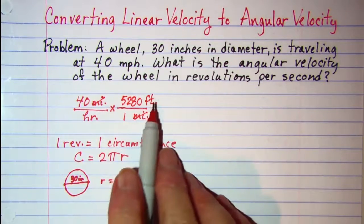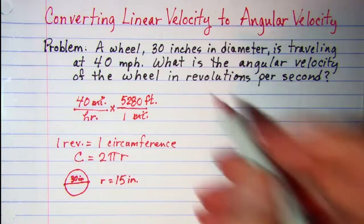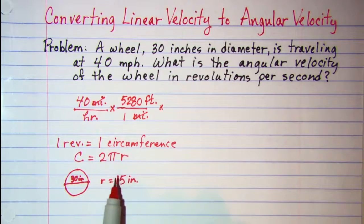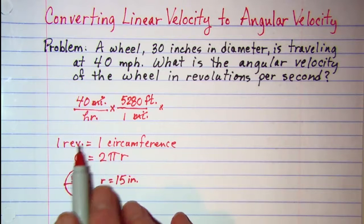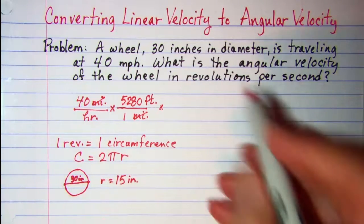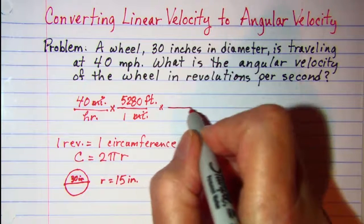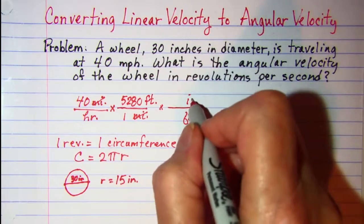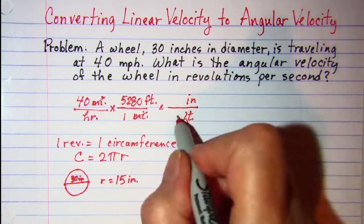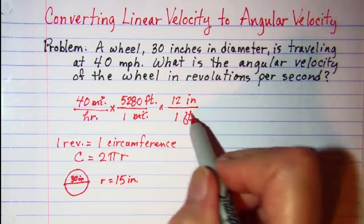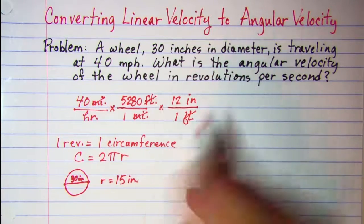Now I'm in feet per hour. Now before I can make the jump from my circumference, which is in inches, to revolutions, I need to change this unit to inches. So I want to cancel off feet and go to inches, and I know that 1 foot is 12 inches. So I can cancel the word feet off.